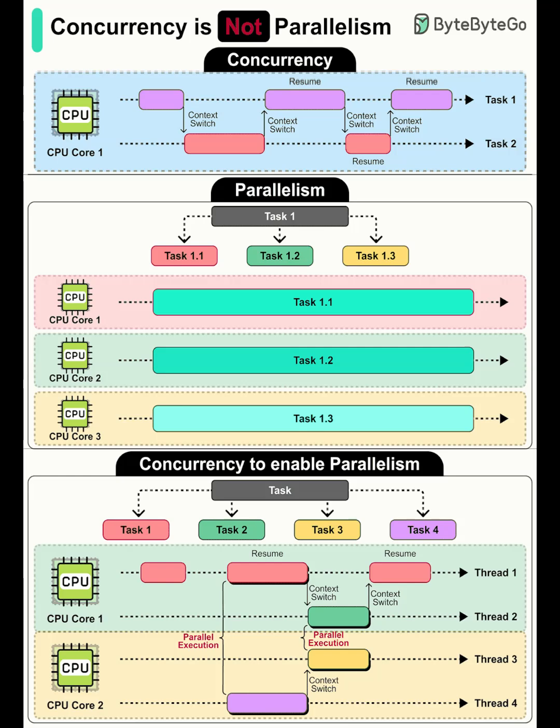Over to you. What challenges have you hit with concurrency or parallelism? Deadlocks, race conditions, thread contention, unexpected slowdowns? Share your stories and wins in the comments.